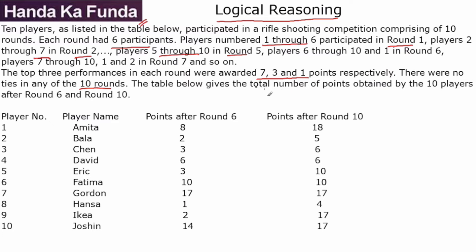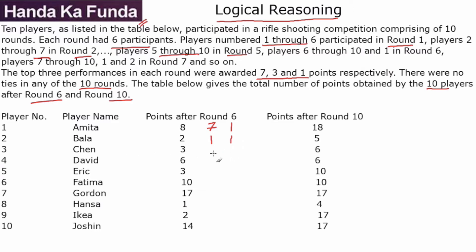The table below gives the total number of points obtained by the players after round 6 and round 10. For example, Amita has scored 8 points after round 6 — that must be 7 in one round and 1 in another. Bala has scored 2, which is only possible with 1 and 1. Chen has scored 3, which could be three 1s or a single 3 — we don't know yet.